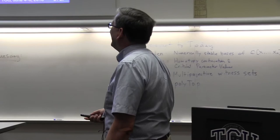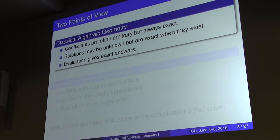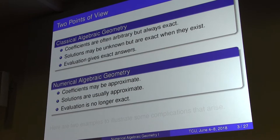In classical algebraic geometry, my training, the coefficients of a system of equations are arbitrary but exact. When solutions exist, they're exact solutions — you plug them in and get exactly zero. In numerical algebraic geometry, the coefficients can be approximate, the solutions are approximate, and when you plug a solution into your system of equations, it won't be zero exactly. I want to give two simple examples to illustrate the complications that can arise.